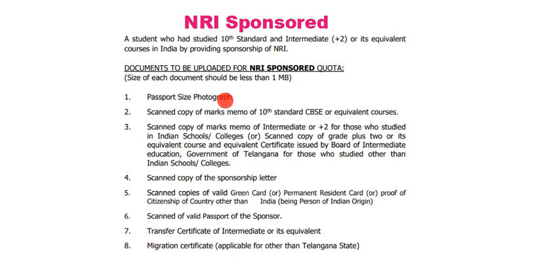For NRI Sponsored quota, documents to submit include: passport-size photograph, scanned copy of 10th marks, scanned copy of Intermediate marks, certificate issued by the Board of Intermediate Education for those who studied other than Indian schools or colleges, scanned copy of sponsorship letter, scanned copy of permanent resident card or proof of citizenship of country other than India, scanned copy of valid passport of the sponsor, Transfer Certificate of Intermediate or equivalent, and Migration Certificate applicable for students who studied outside Telangana state.